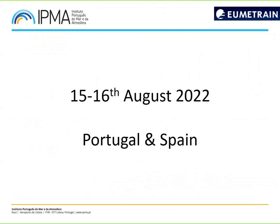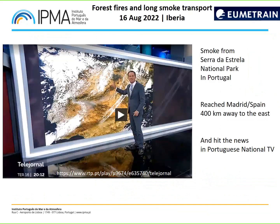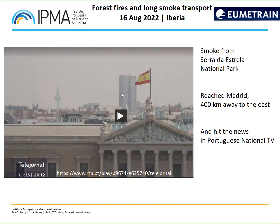On the 15th and 16th of August, also in Portugal and Spain, satellite images were used by the media — a well-known journalist showed the smoke from Serra da Estrela national park on the Portugal national evening news. By the 16th, the wind had shifted to the west, projecting the plume eastward. This fire, which started on the 6th of August and lasted more than 10 days in total, produced smoke that reached Madrid — 400 kilometers to the east — and this was shown in the Spanish news as well.